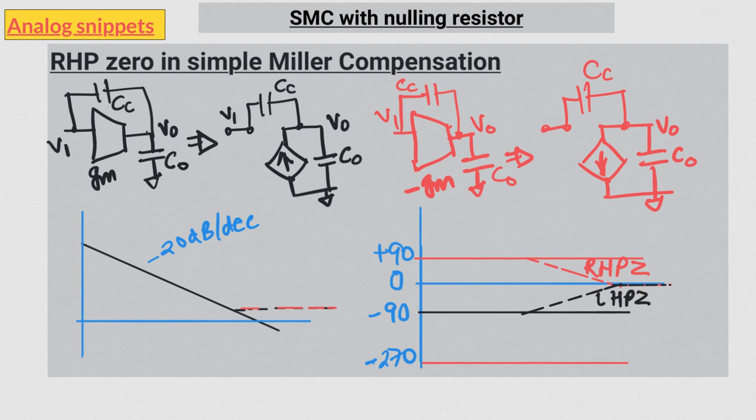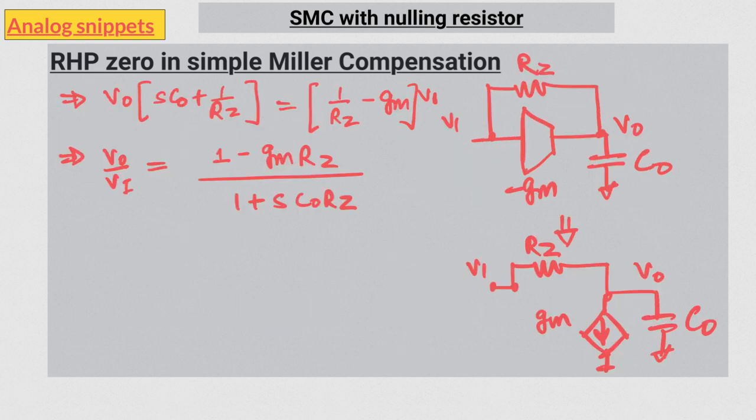But this right-hand plane zero is not good for stability. Before considering adding a nulling resistor in series with the compensation capacitor, let's first consider what happens if there is only the nulling resistor between input and output. Here we have RZ connected between input and output. We are only considering the inverting gm configuration here.